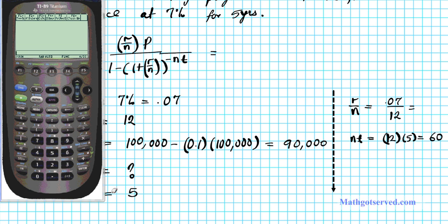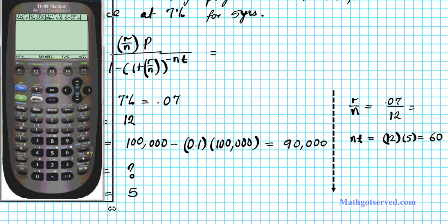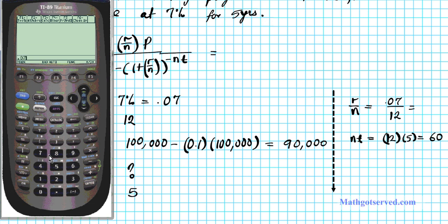All right, I'm going to be using my TI-89 titanium for my computations. Here, so let's see. We're doing 0.07 divided by 12. So the rate per period is 0.005833. So let's write that down, 0.005833. Now I'm ready to put everything into my formula. So let's go ahead and do that.